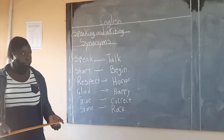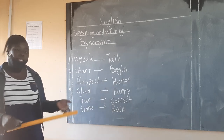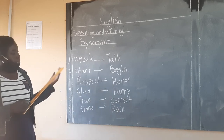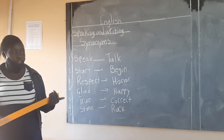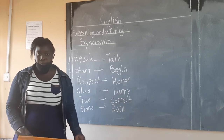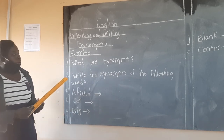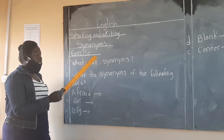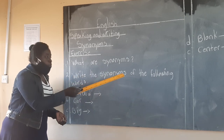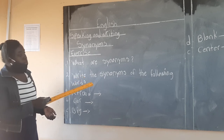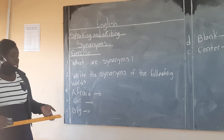Based on what we have learned today, a synonym is a word that means exactly or nearly the same as another word. We gave different examples of words with their synonyms. Now I want us to do an activity together. Here is our exercise — number one: what are synonyms? Number two: write the synonyms of the following words — afraid, car, big, blank, center.